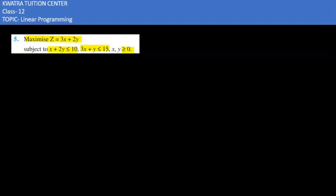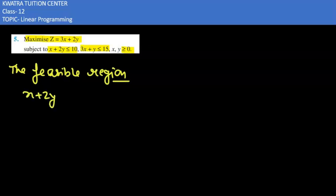First of all, we will check the feasible region. For this, we have to plot the two constraint equations: x + 2y ≤ 10 and 3x + y ≤ 15. When we plot these two constraints, we obtain the graphical representation shown here.